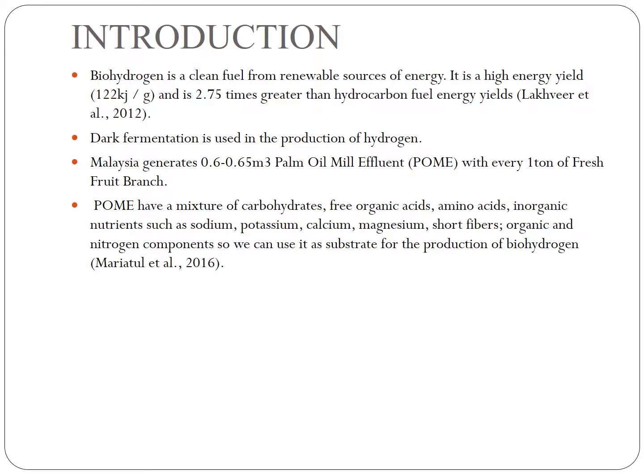For the Introduction, biohydrogen is a clean fuel from renewable sources of energy. It has a high energy yield, 2.75 times greater than hydrocarbon fuel energy yield. Dark fermentation is used in the production of hydrogen. Nature generates 0.6 to 0.65 cubic meters of POME, which is known as palm oil mill effluent, with every 1 ton of fresh fruit bunch. POME has a mixture of carbohydrates, free organic acids, amino acids, and organic nutrients such as sodium, potassium, calcium, magnesium, short fibers, and nitrogen components, so we can use it as a substrate for the production of biohydrogen.